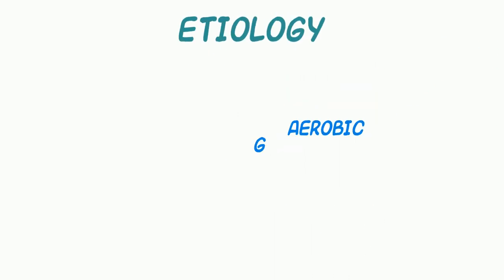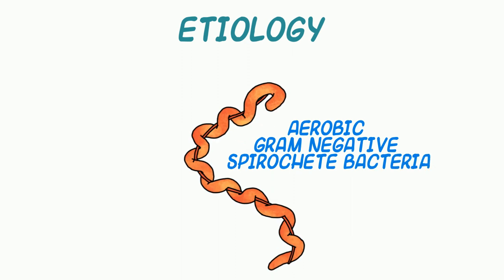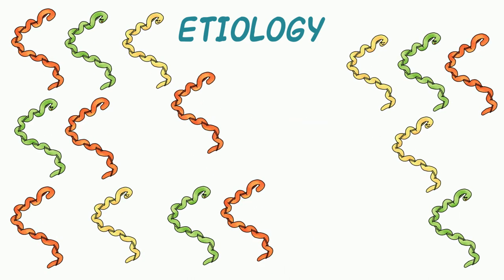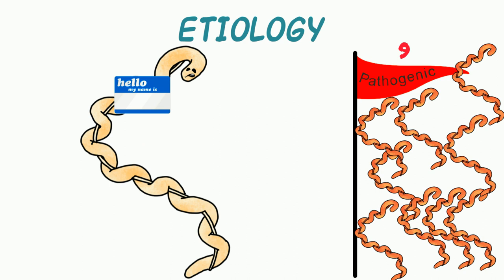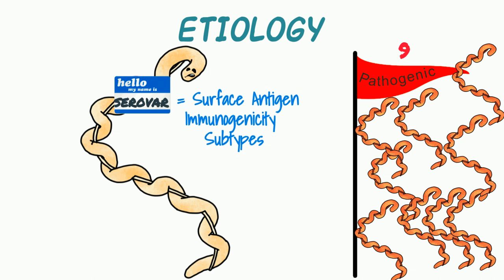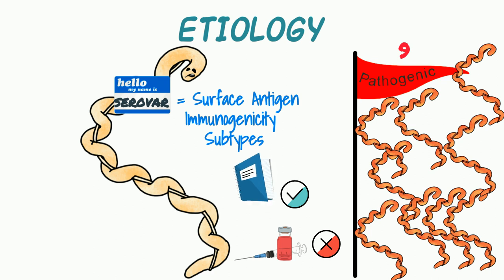Leptospira are aerobic, gram-negative, spirochete bacteria with a corkscrew appearance. Historically, there have been many classifications used, but genetic analysis now recognizes 21 species of leptospires, with 9 being pathogenic, 6 being intermediate in pathogenicity, and 6 non-pathogenic. Some of the common leptospiral pathogens of domestic animals now have different species names that include serovar, or surface antigen immunogenicity, subtypes. Serovar and serogroup names remain in common use and are often still used when discussing the identification and management of leptospirosis.